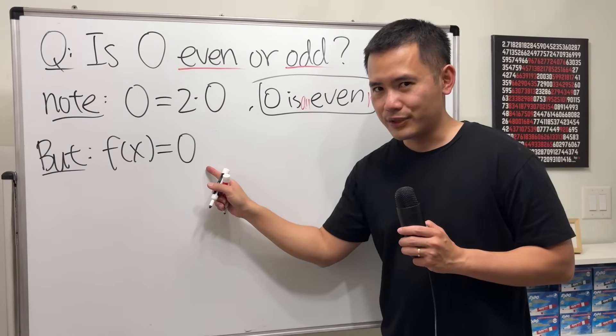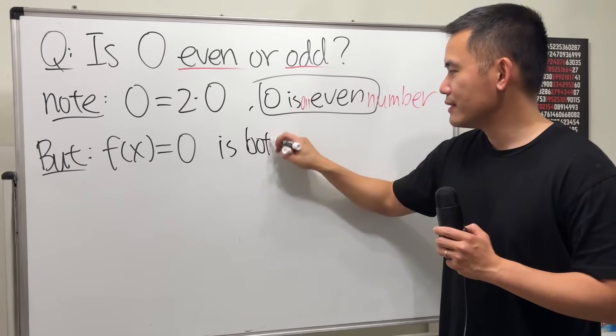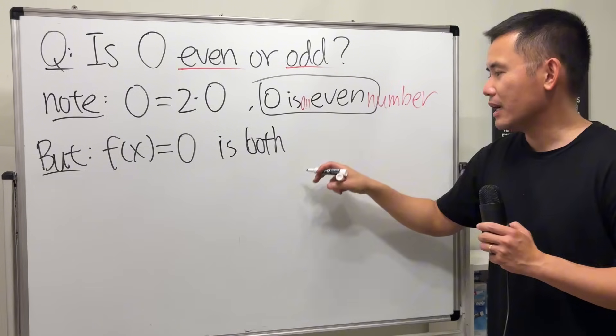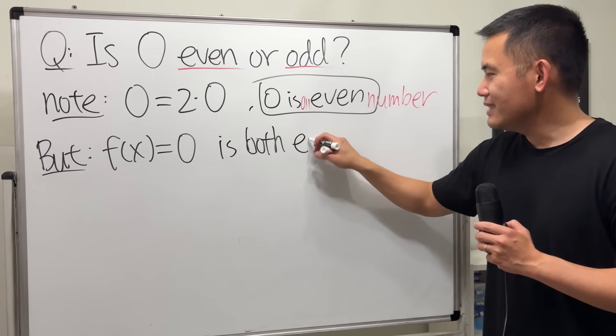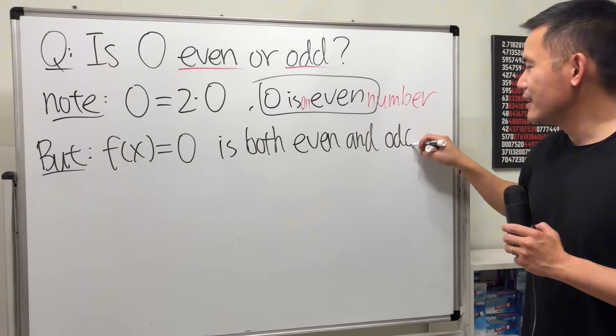So this is the 0 function. This is both even and odd function.